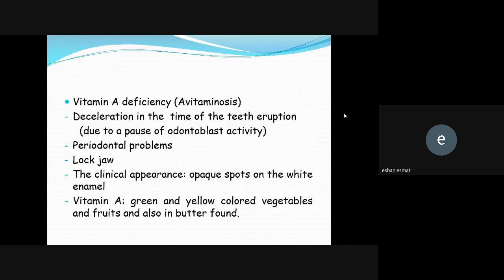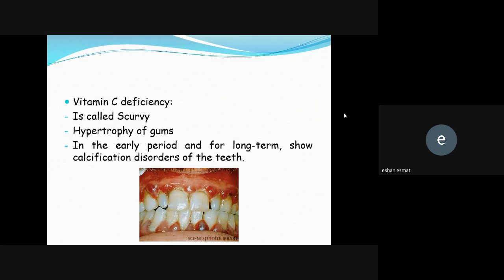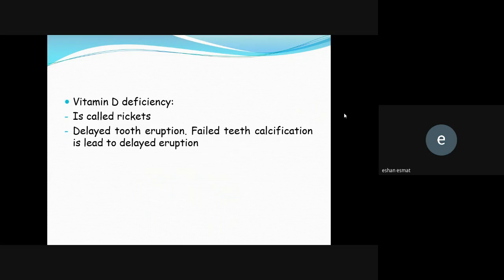Vitamin D deficiency leads to hypertrophy of the gums, delayed tooth eruption, periodontal problems, and lock jaw; clinically appearing as white spots on the enamel. Vitamin B deficiency leads to soft tissue problems and migration of teeth due to periodontal destruction. Vitamin C deficiency leads to hypertrophy of the gums and early calcification of teeth. Vitamin D deficiency also causes delayed tooth eruption and failed tooth calcification.